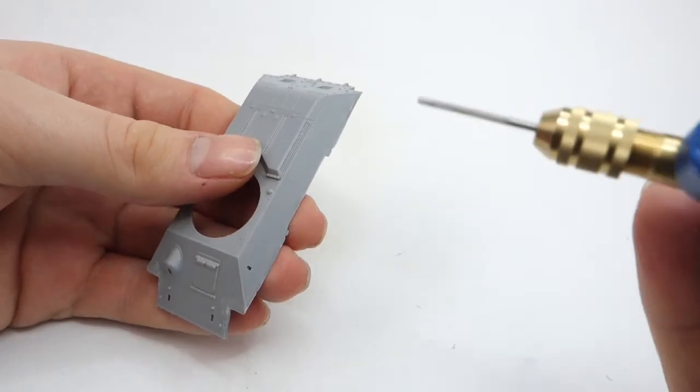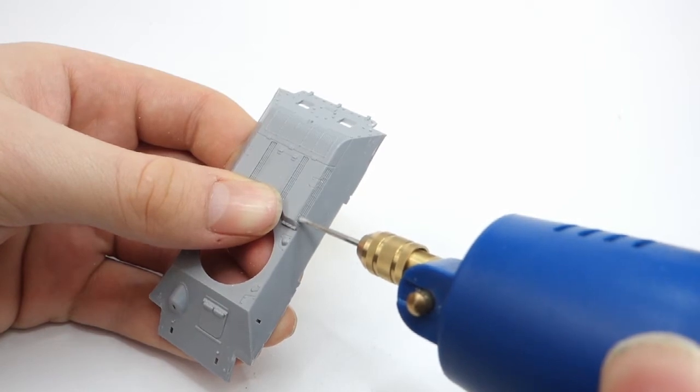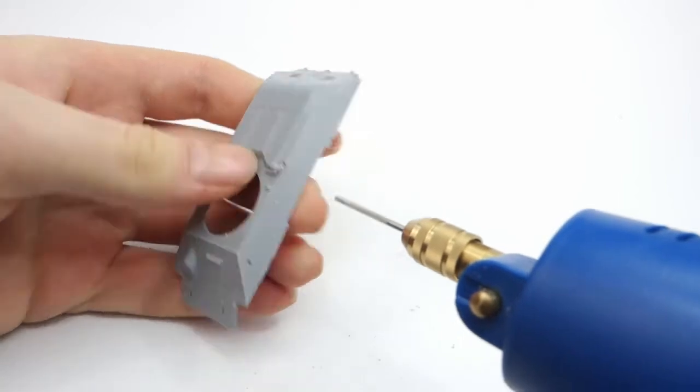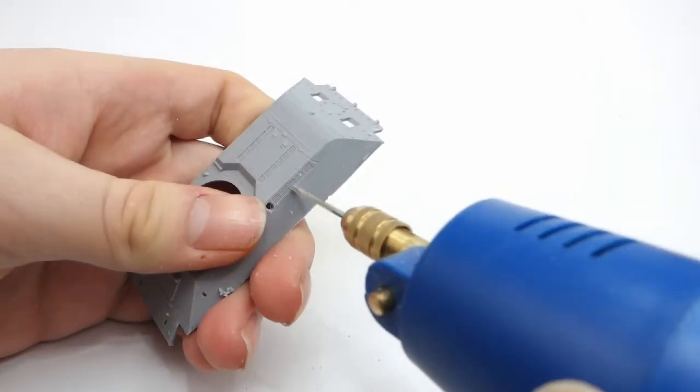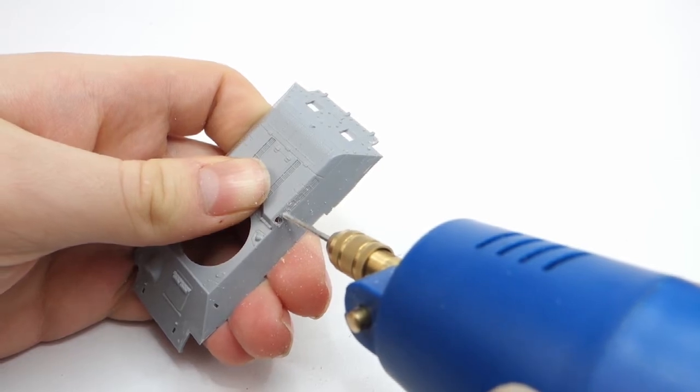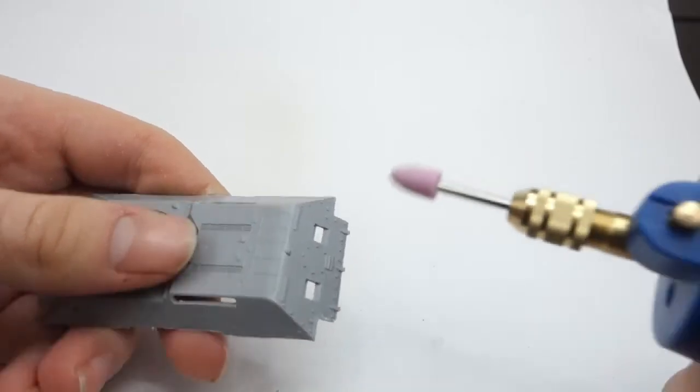The next thing I'm going to change are those air intakes, which I'm going to replace with photo-etched details. To drill out those air intakes I use electric drill and I simply drill out one hole next to the other, which I will later join up using a hobby knife and then sand down using a file.